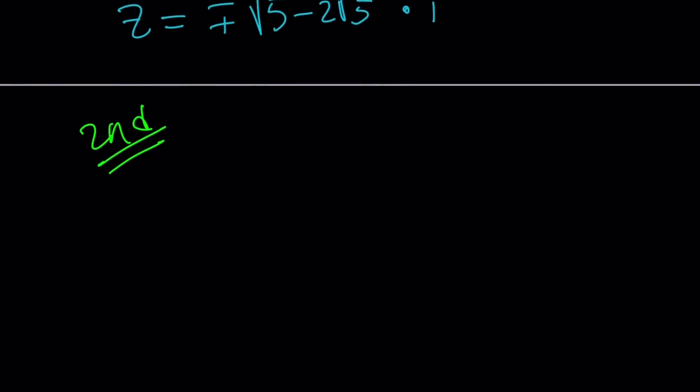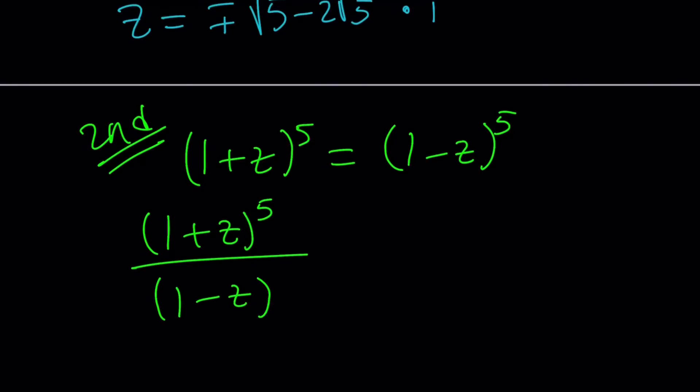Let me know which one you like better, though. So we have (1+z)^5 = (1-z)^5. Great. So let's divide both sides by... In the first method, we basically subtract it and use the binomial theorem. This time, we're going to use an alternative approach and divide both sides by the right-hand side.